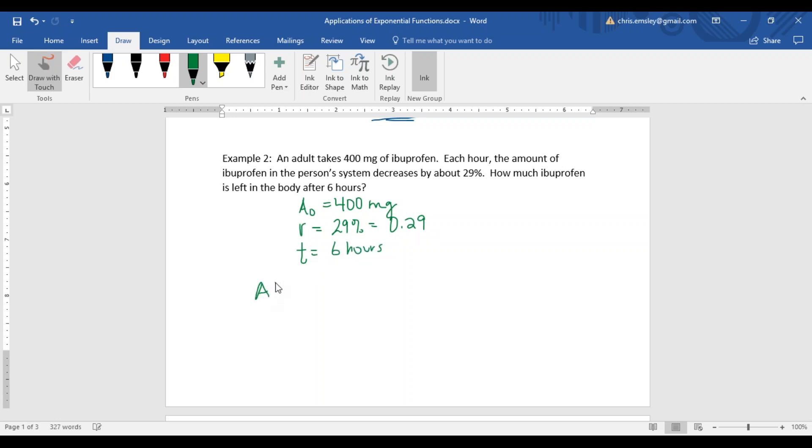This time our formula, we want to know the amount of ibuprofen after 6 hours. That's 400 times - this time our base is 1 minus 0.29, because that's exponential decay. The ibuprofen is being metabolized by our body, so that's going to get less over time, raised to the power of 6.